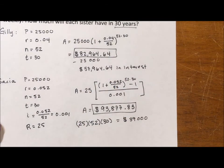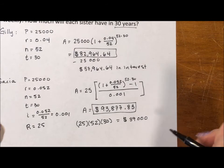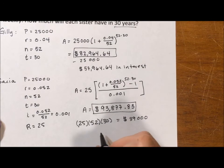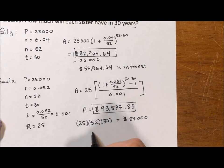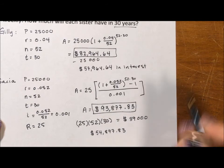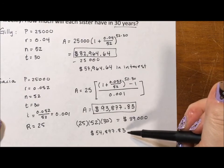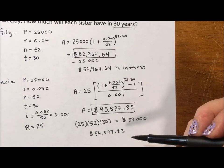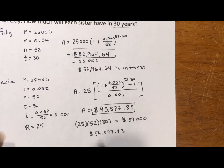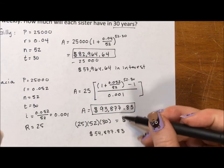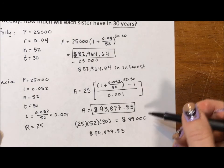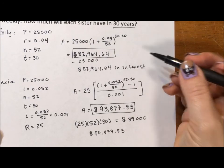Gilly only put in $25,000. Saisha put in $39,000. If we subtract out that $39,000, we find out where Gilly earned almost $58,000 in interest, Saisha's interest is $54,877.83. So Saisha's actually earned less because she's had to build her money and she only came close at all because she continued past $25,000 quite a bit. So the lump sum is definitely the faster way to earn money.